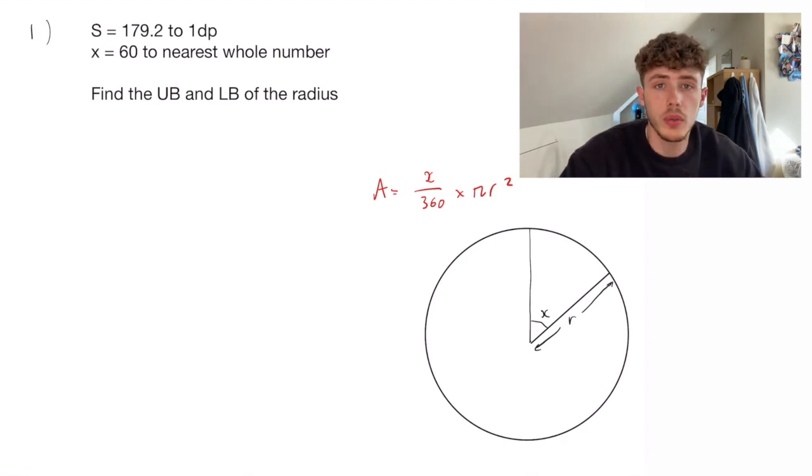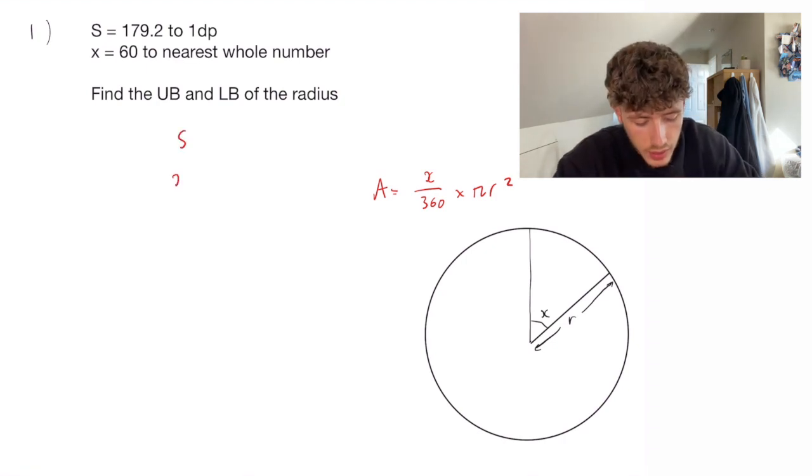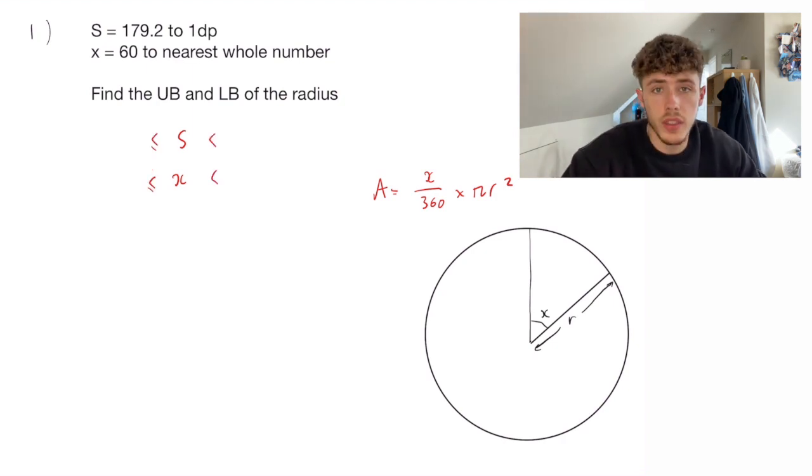Now one thing I always do when I do bounds is I immediately write the error intervals for the things I'm given in the question. So I'd write this out and then I work out the upper and lower bound of each.